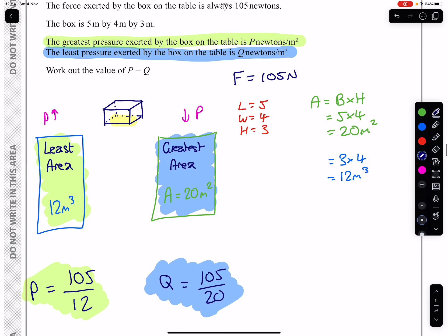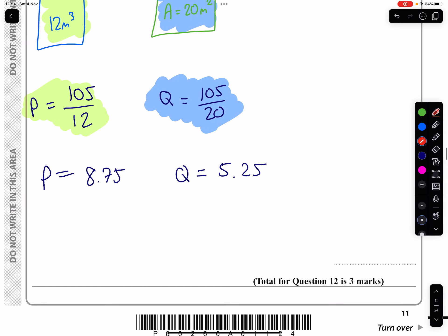The question then asks us to work out the value of these taken away, P take away Q. So 8.75 take away 5.25, which gives us 3.5, is our actual answer. Done.